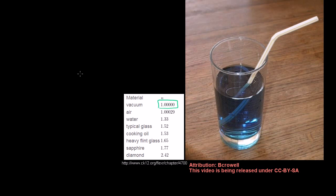The index of refraction is obviously 1 for a vacuum, because N equals C divided by the speed of light in that material — in a vacuum it's traveling at C, so N equals 1. In air, the speed is only slightly smaller than C, so the index is only slightly above 1. But for a diamond, light travels a lot slower, so the index is much higher. We'll do more examples using Snell's Law in the next videos, and I'll use this graphic to help visualize why a straw looks bent in water.